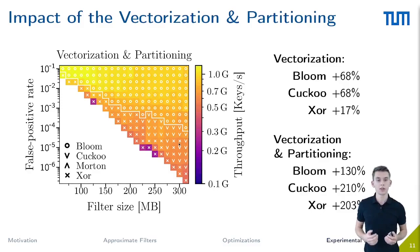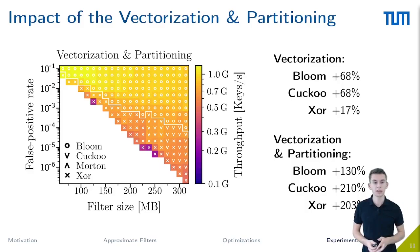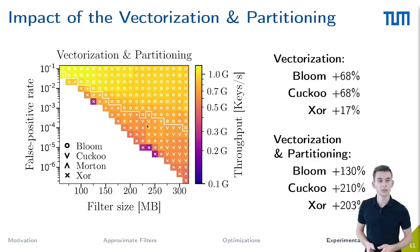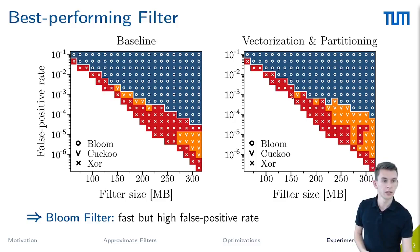In combination with partitioning, we now see a different picture. Since the fingerprint filters perform more random memory accesses than the blocked Bloom filter, their performance increases by more than 200%. Partitioning in particular closes the performance gap between the two filter types, and the Bloom filters above the white line are now only 1.5 times faster than the fingerprint filters beneath. Overall, the two optimizations provide a higher speed-up to the fingerprint filters, and especially the cuckoo filter gains performance, as can be seen in the figure on the right side.